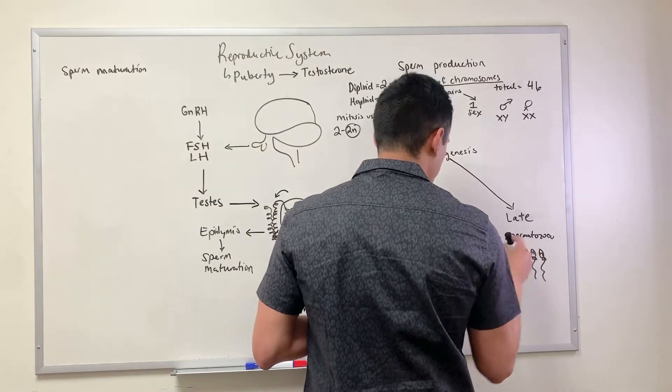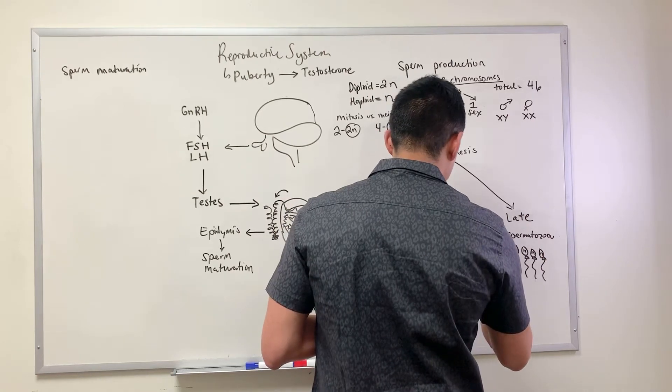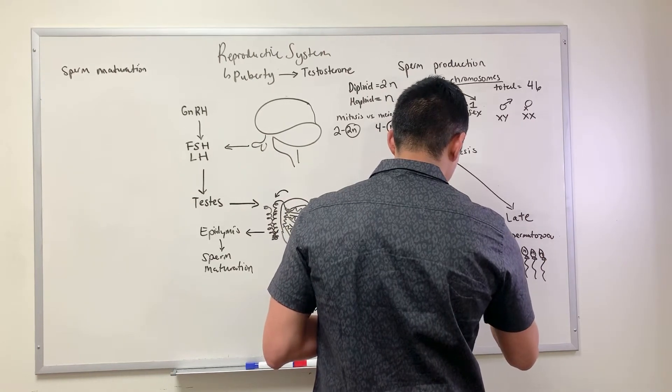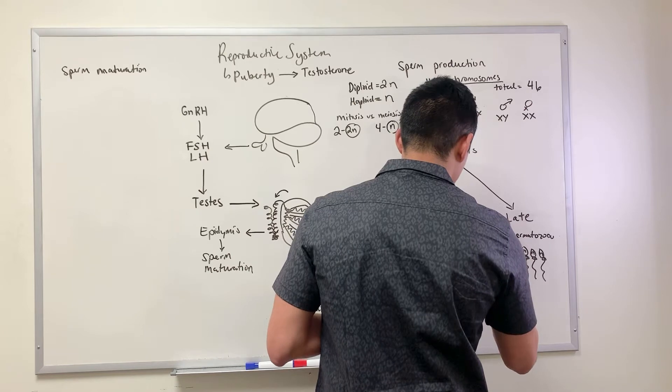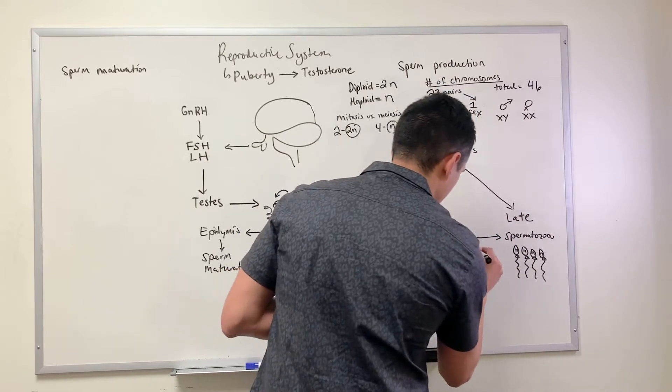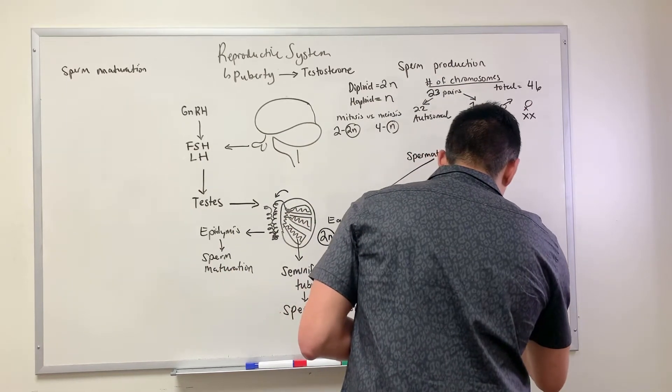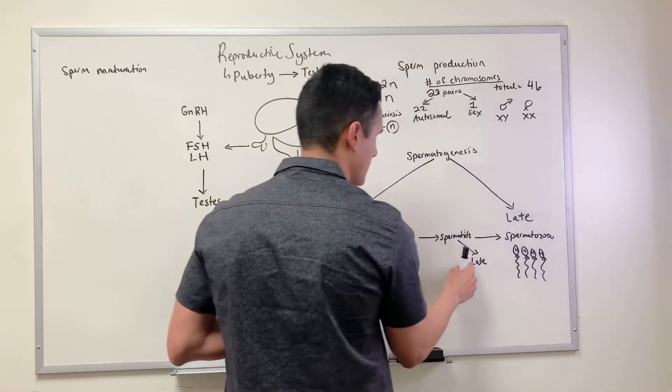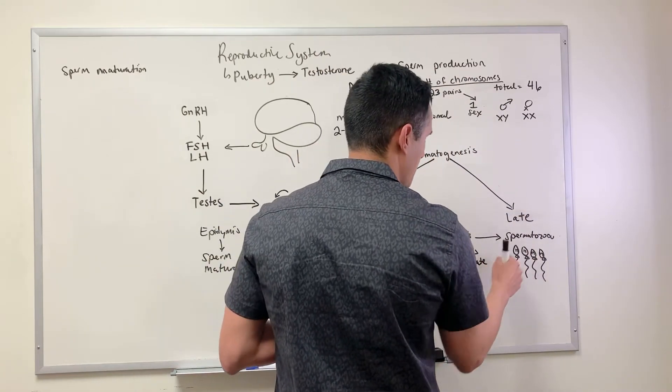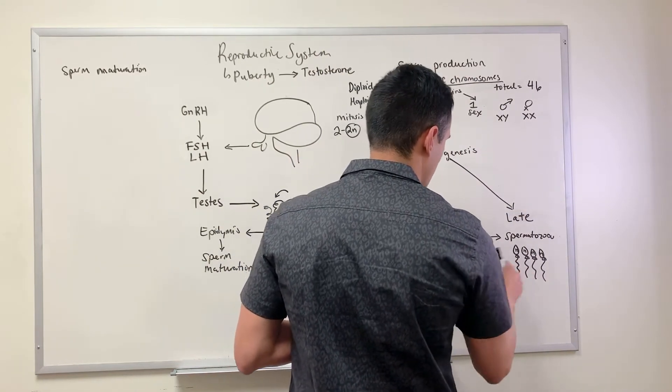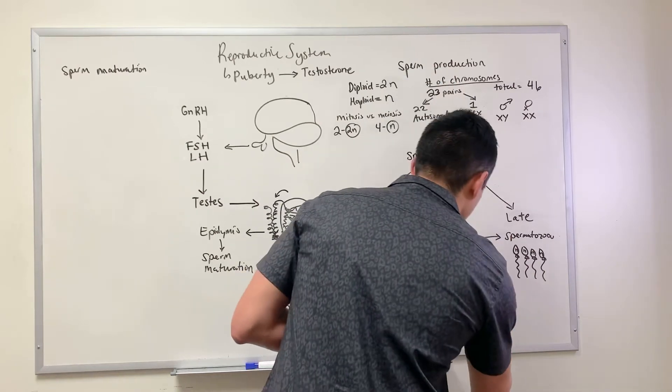Spermatozoa develop from what's known as spermatids.